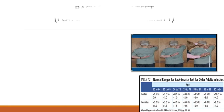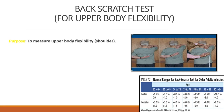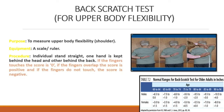Back Scratch Test for Upper Body Flexibility. Purpose: To measure upper body flexibility, specifically the shoulder. Equipment: A scale ruler. Procedure: Individuals stand straight; one hand is kept behind the head, another behind the back. If the fingers touch, the score is 0. If the fingers overlap, the score is positive. If the fingers do not touch, the score is negative.